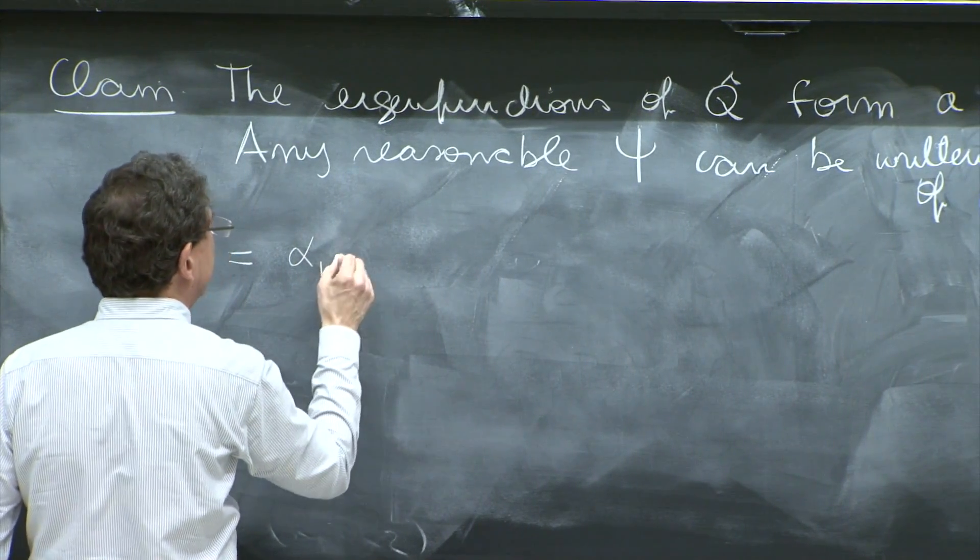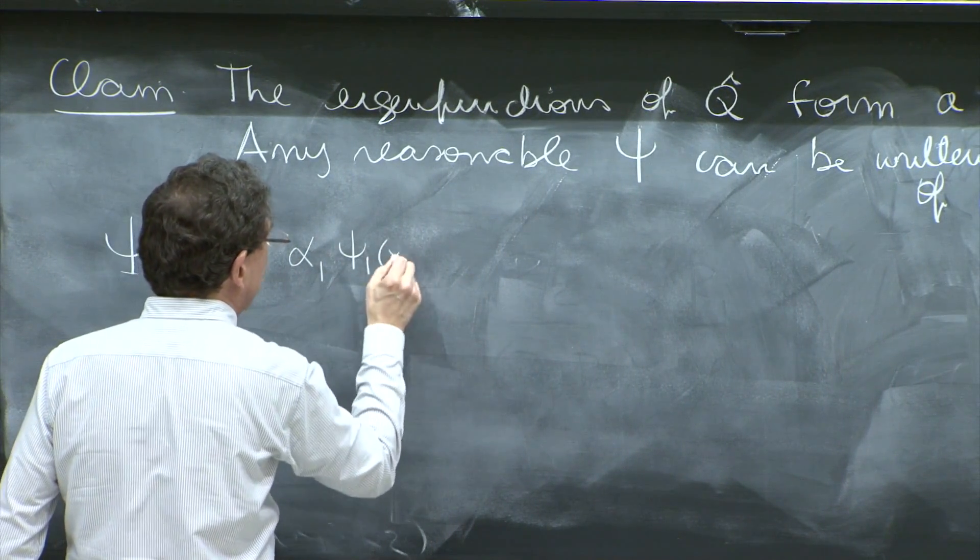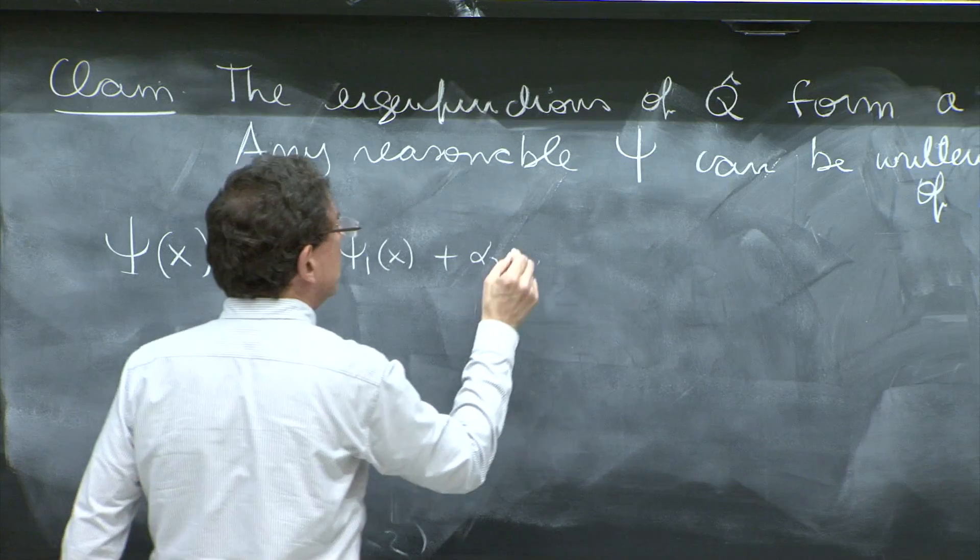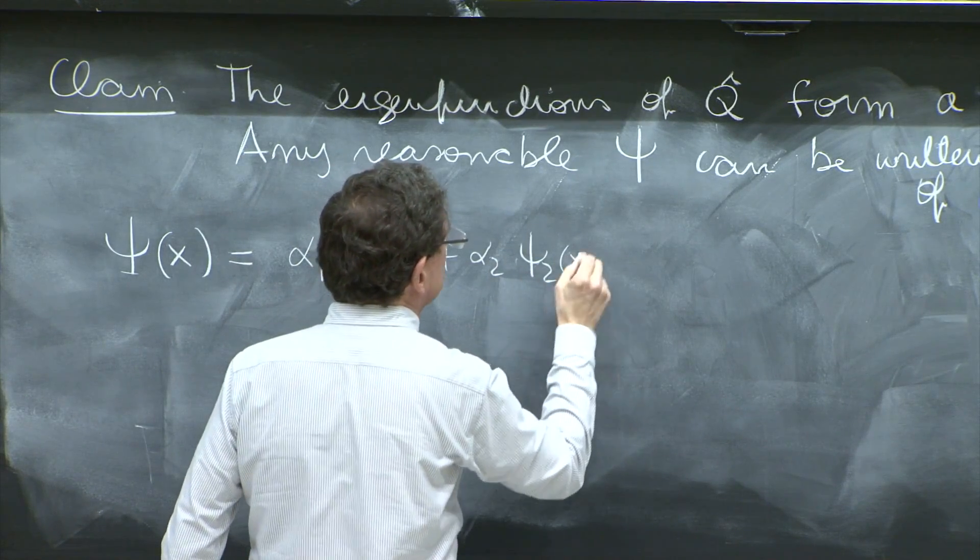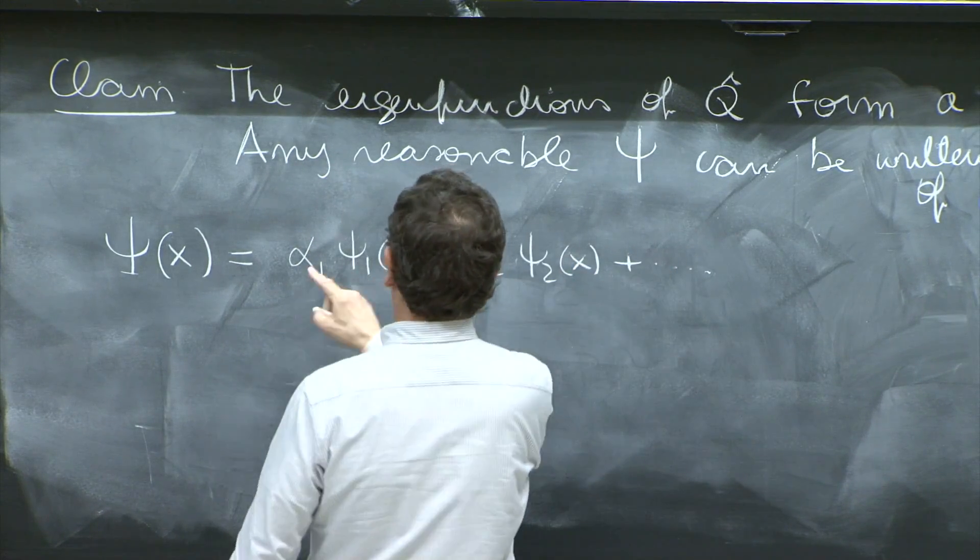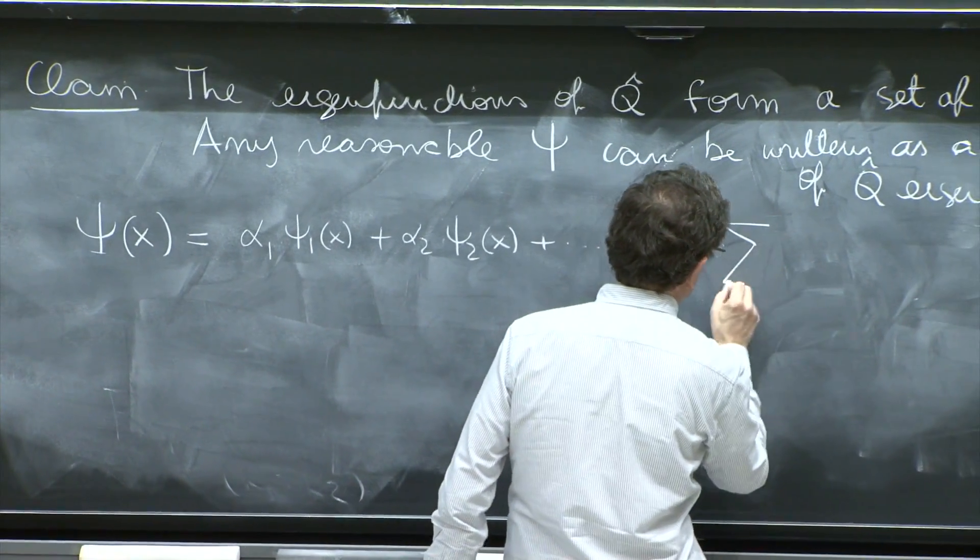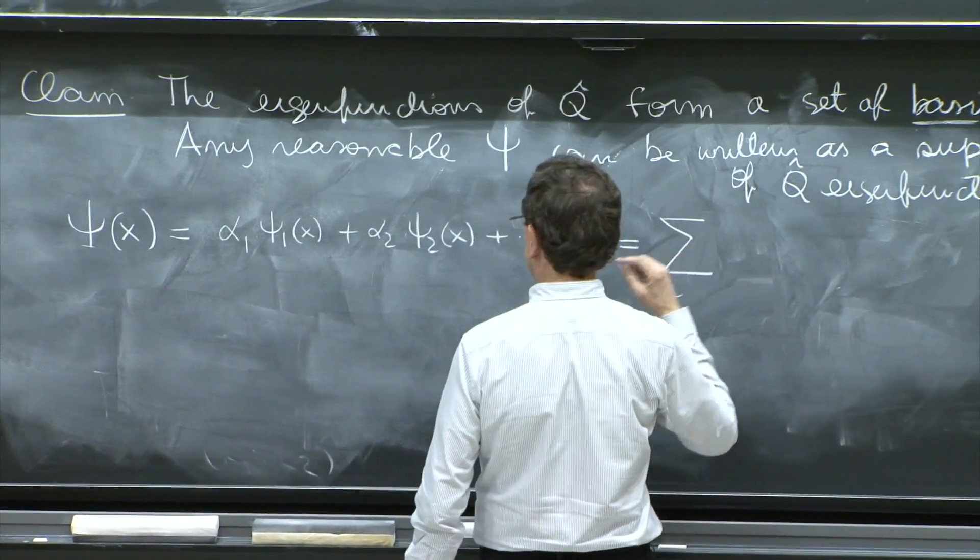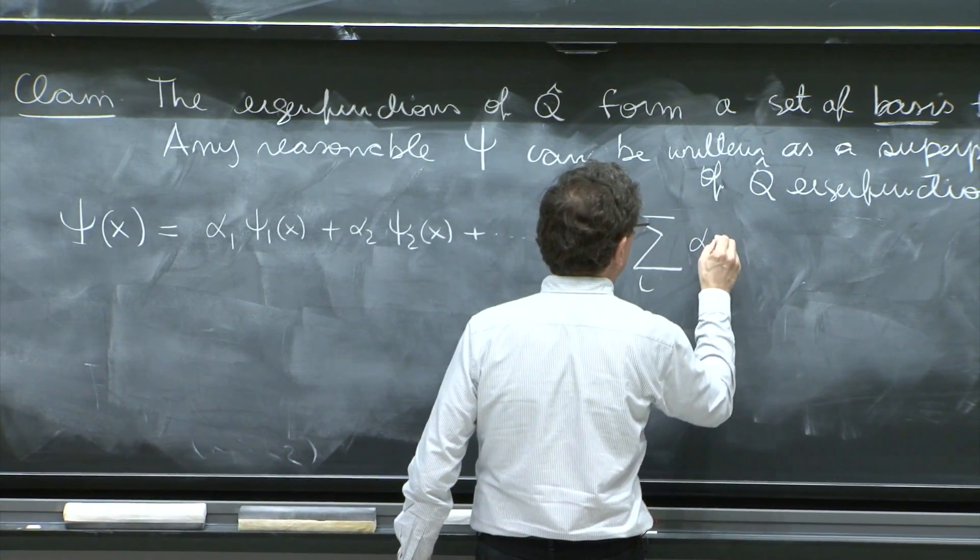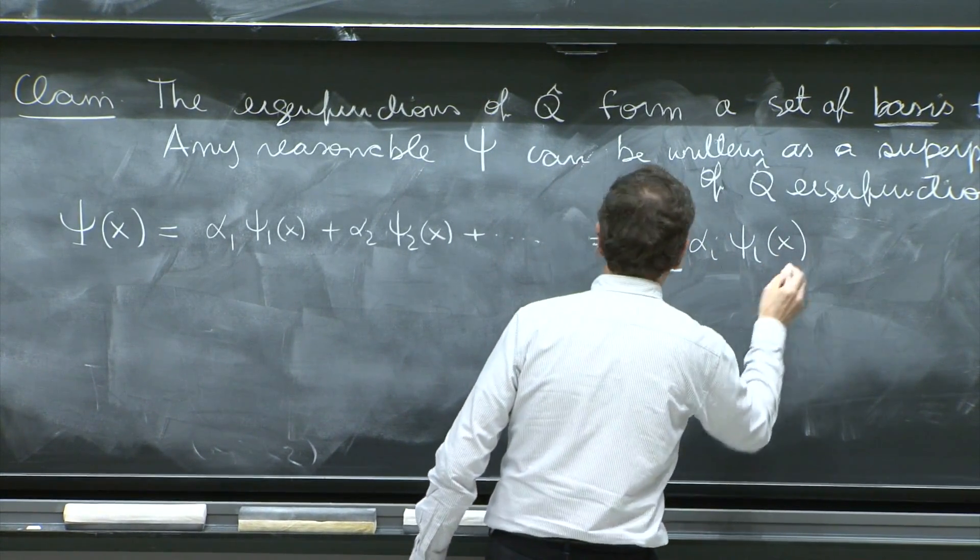So there are numbers alpha 1, psi 1 of x plus alpha 2, psi 2 of x. Those are the expansion coefficients, the alphas. And in summary, we say sum over i, alpha i psi i of x.